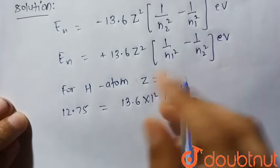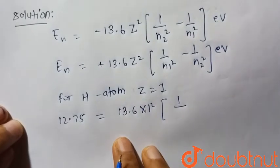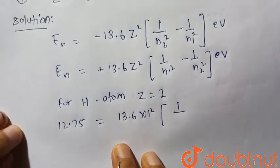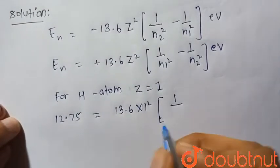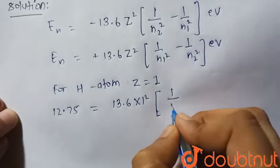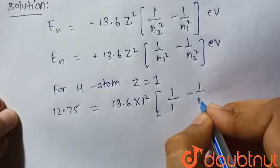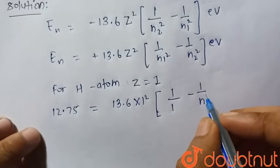Since it is given that the electron in the ground state in the hydrogen atom will jump after absorbing 12.75 electron volt, it will be equal to 1 and the next level in which it will jump.